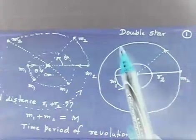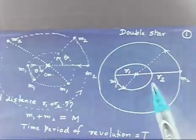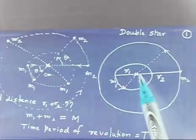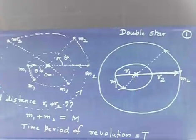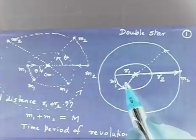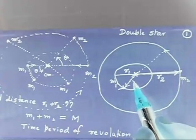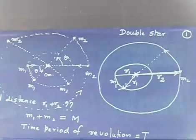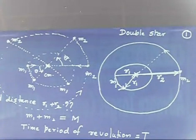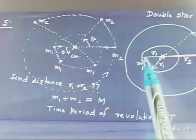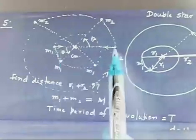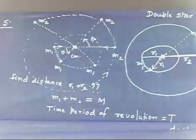Let us say the radius of m2's orbit is r2 from the center of mass, and the radius of m1's orbit is r1 from the center of mass. The question is asking for r1 plus r2 — that is, the total distance between the two masses, which remains constant at any point in time.